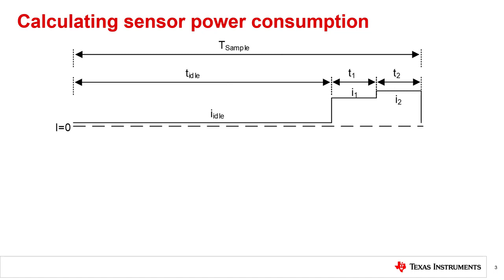T-idle refers to the period where the sensor is in sleep or standby mode. T1 refers to the length of the first conversion period, which should be the temperature conversion, and T2 refers to the length of the second conversion period, typically for RH. We will calculate the average current value as the total current value of each of these phases over the sample period.